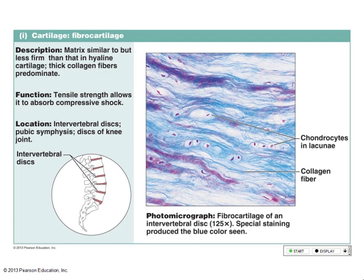The third type of cartilage has lots and lots of fibers — that's fibrocartilage. We find this in something called an intervertebral disc — between the vertebrae. Is there movement in the vertebrae? Yes, but not a lot, because too much movement would squish important spinal nerves. So it allows for movement, protection, and cushioning.